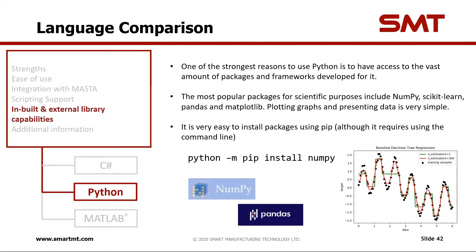Moving on to Python libraries — one of the strongest reasons to use Python is the vast amount of packages and frameworks developed for it. The example videos made use of packages including NumPy, scikit-learn (used for the minimization), pandas, and matplotlib, which is the graphing library. The graphs seen in those videos were generated using matplotlib. It is very easy to install these packages — in Python the package manager is pip as opposed to NuGet in C#. To install a package, it's just a simple command line: 'python -m pip install numpy'. Matplotlib is a very powerful graphing library with a lot you can do with 2D and 3D graphs.